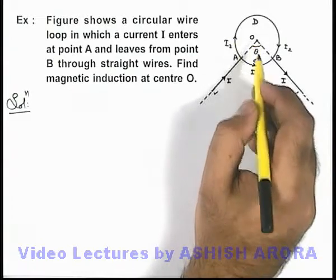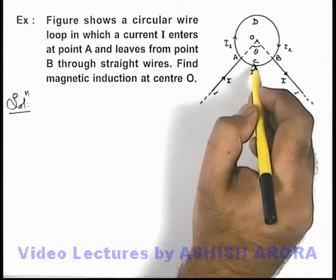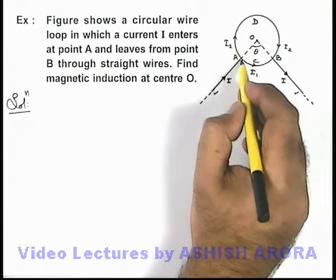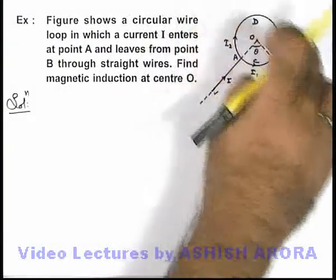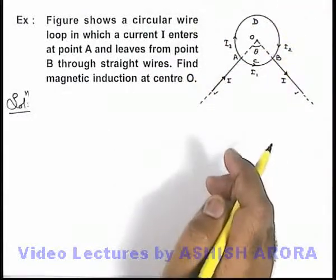And at point O magnetic induction will be there due to these 2 segments. And here we can see due to the segment i1 magnetic induction is in upward direction and due to i2 where current is clockwise it is in downward direction.